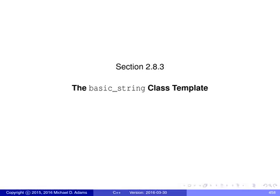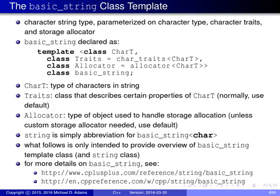In this section of the lecture material, I'm going to give a brief overview of the basic_string class template from the standard library. The basic_string class template provides a means for representing character strings. This template is parametrized on the character type, character traits, and storage allocator used to allocate memory for strings, and the declaration for this template is as shown on the slide here.